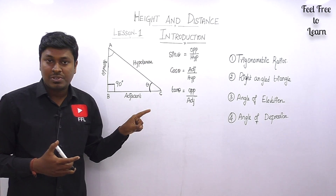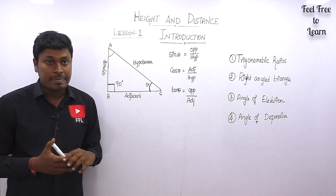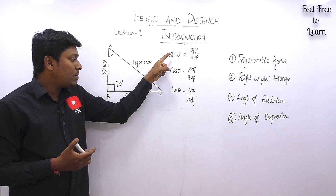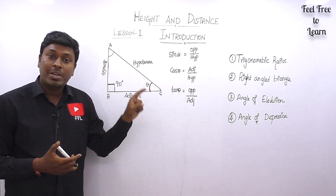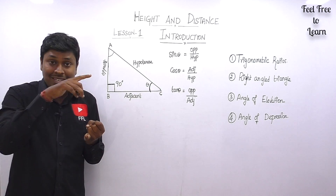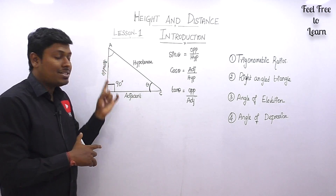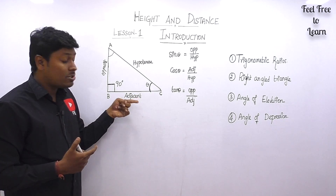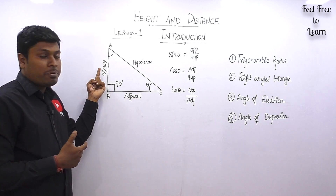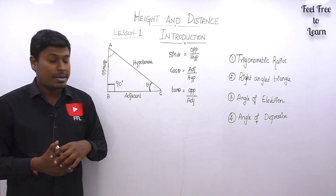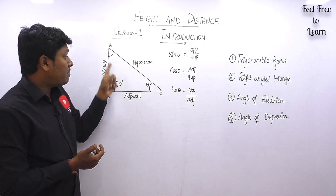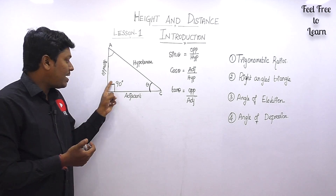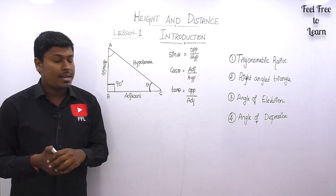To summarize: for trigonometrical ratios, memorize the tabular column. For the right angle triangle, learn the three formulas and know which side is hypotenuse, opposite, and adjacent — also called perpendicular and base. Remember that the sum of three angles of a right angle triangle is 180°, with one angle always being 90°.